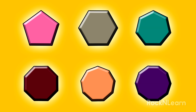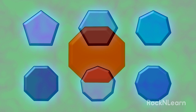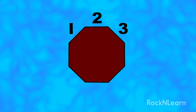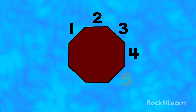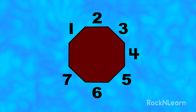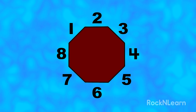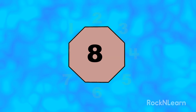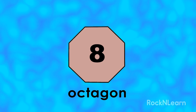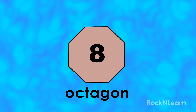Point to the maroon shape. Let's count the sides. One, two, three, four, five, six, seven, eight! A shape with eight sides is called an octagon. Octagon!